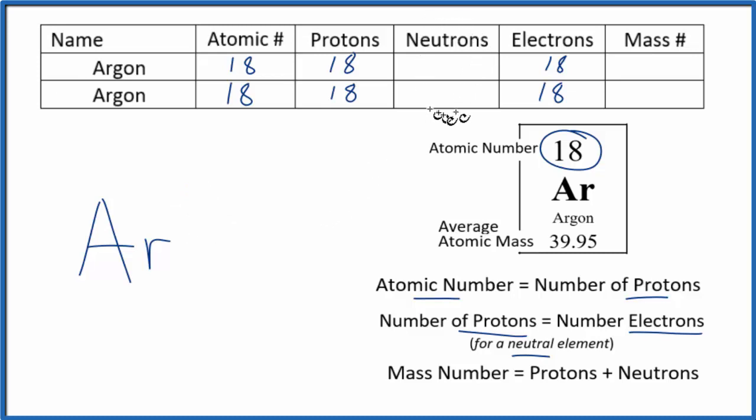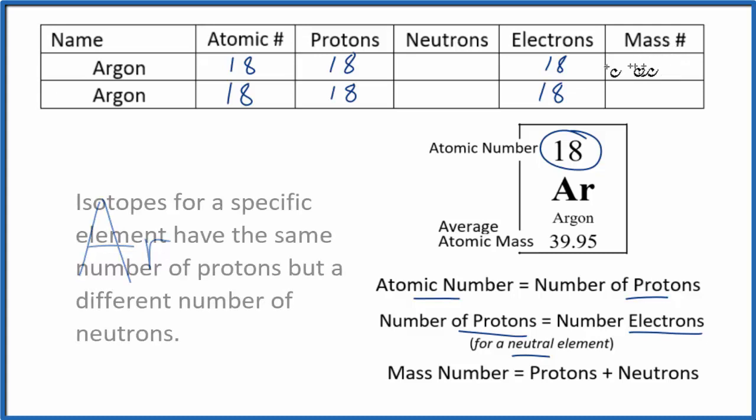Now we don't have neutrons or mass number yet. Because protons plus neutrons equals mass number, that's going to be different for each isotope. Often you're given the neutrons or the mass number and you can figure the other one out, but if not, go to the periodic table where you have the average atomic mass.